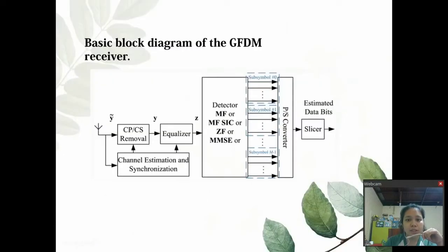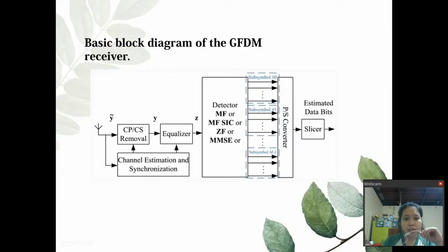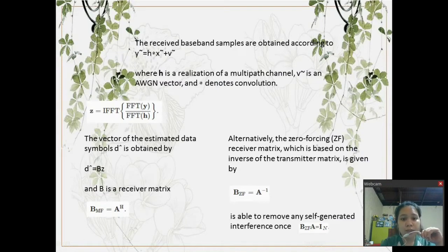Let's move to the basic block diagram of the GFDM receiver where the bits pass through the AWGN. The received baseband samples are obtained according to Y equals H asterisk X plus V where H is a realization of a multipath channel and V is an AWGN vector and the asterisk denotes convolution.